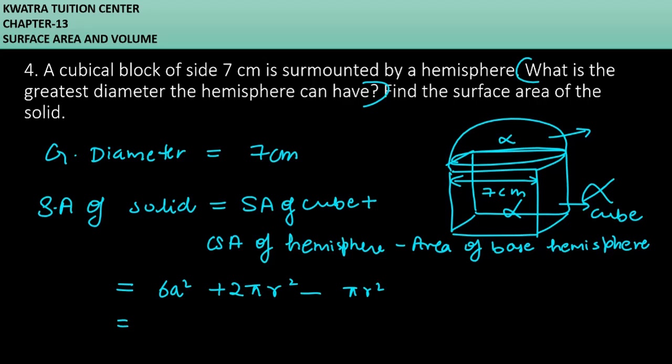So now what can we reduce? You can see that 2πr² and πr² can be cancelled, so you are left with πr² only.